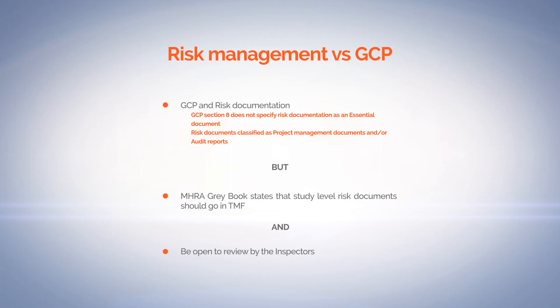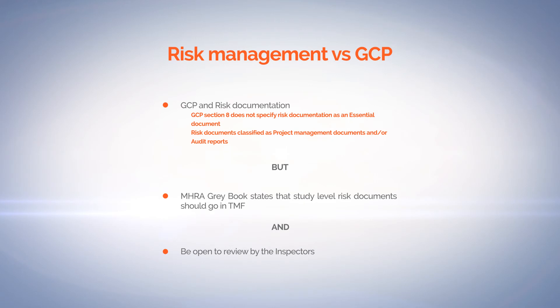The MHRA book does state that study-level risk documentation should go in the trial master file. So although there isn't specifically a section there for it, it should go in the trial master file. Your risk documentation will always be open to review by inspectors, who may well ask for it now that they expect everyone to be taking a risk-based approach.